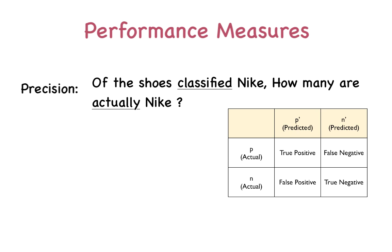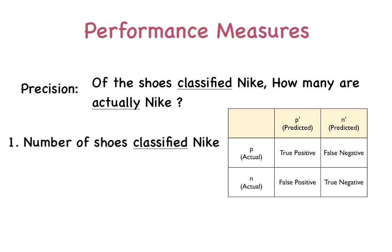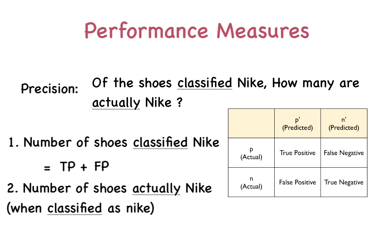From the precision statement, we need two quantities. First is the number of shoes classified as Nike — this is the number of true positives plus the number of false positives. The second is the number of shoes that were actually Nike when classified as Nike, which is once again the number of true positives. Precision is thus the number of true positives divided by the total number of true positives and false positives.